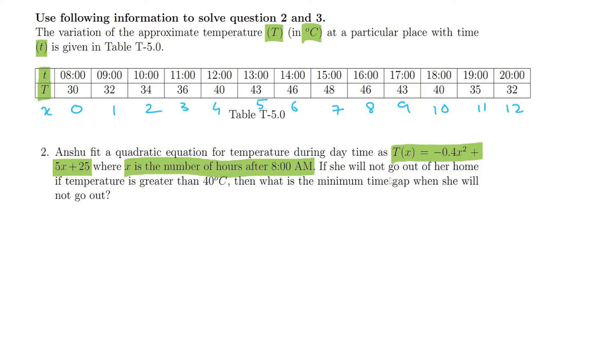If Anshu will not go out of her home if temperature is greater than 40 degrees, then what is the minimum time gap when she will not go out? Which means what is the time when the temperature is greater than 40, on the basis of this particular quadratic equation.